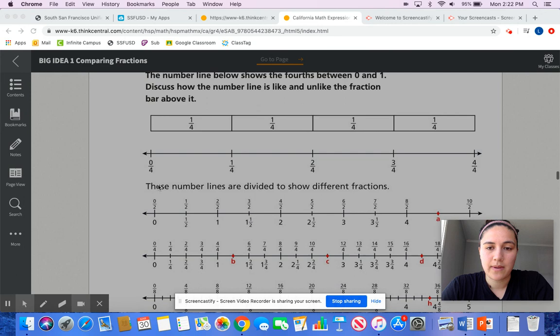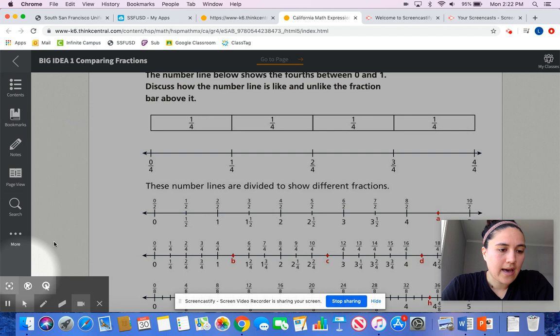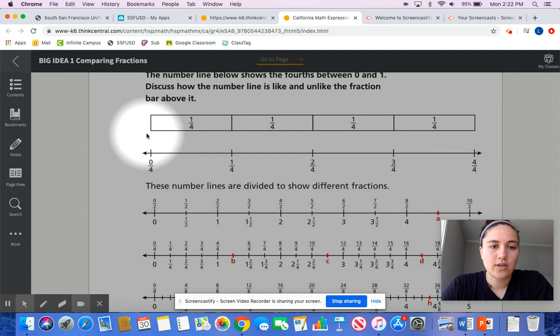Today we're going to be looking at a number line, and we know that fractions are any number that's between a whole number. If you look here, you have 0 fourths. When your numerator is 0, you know that that fraction is actually equal to 0.